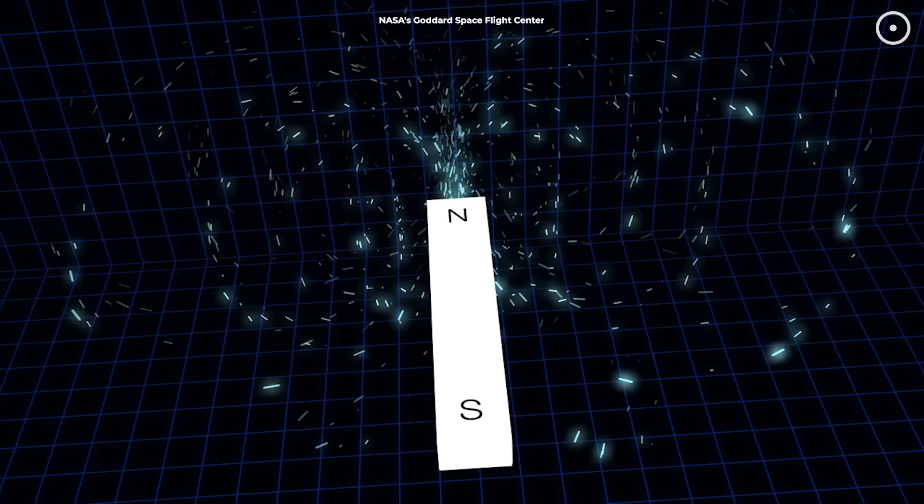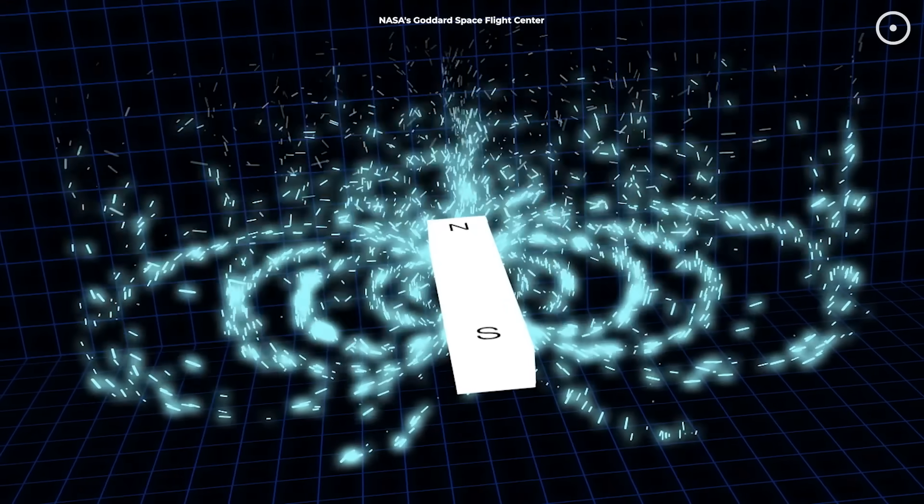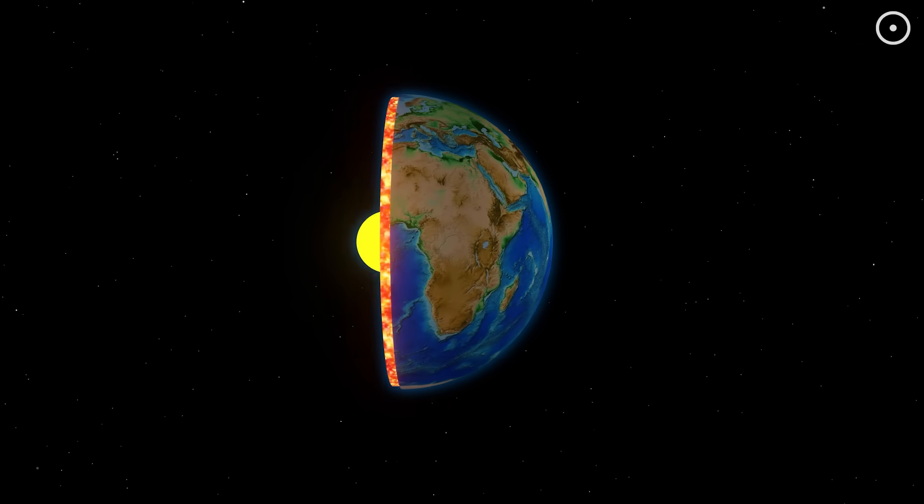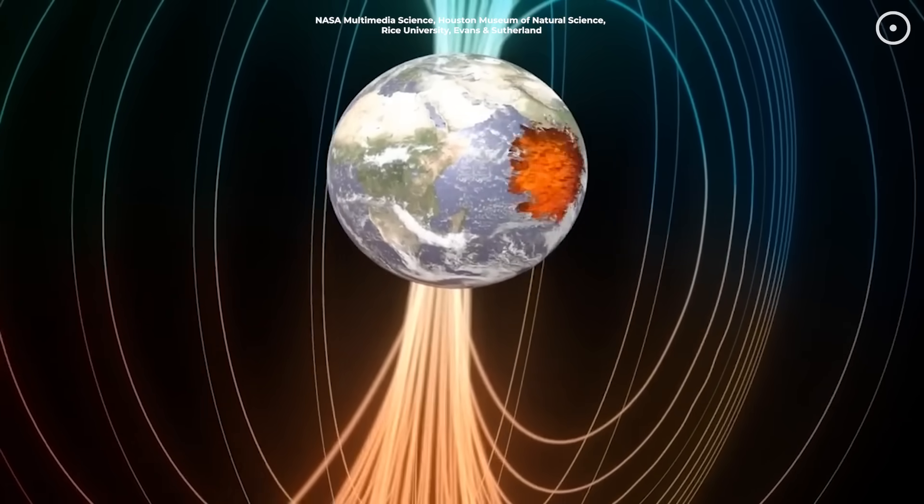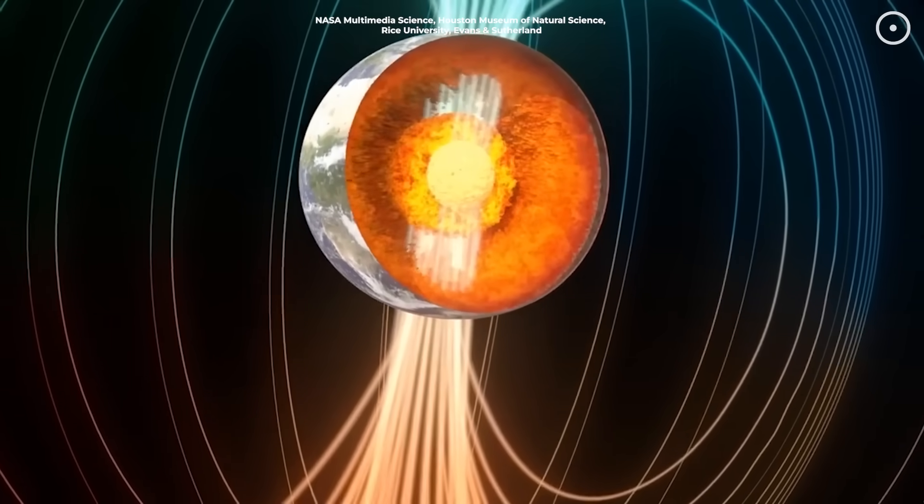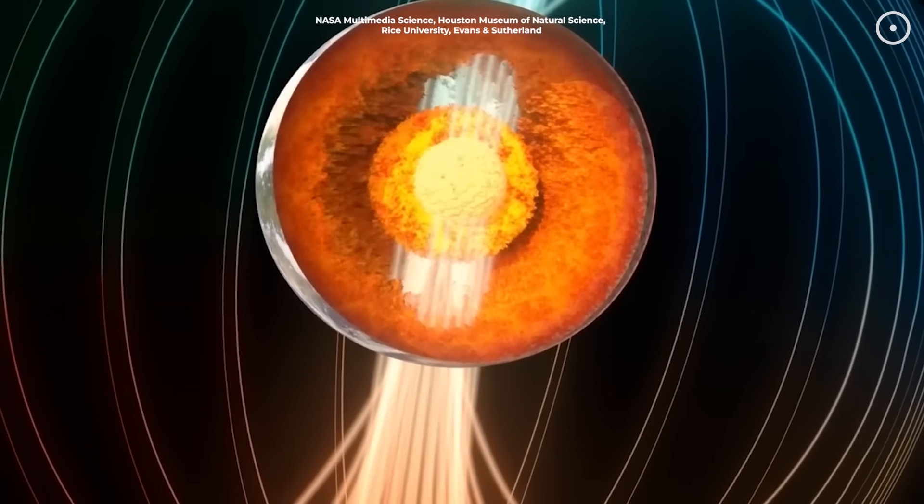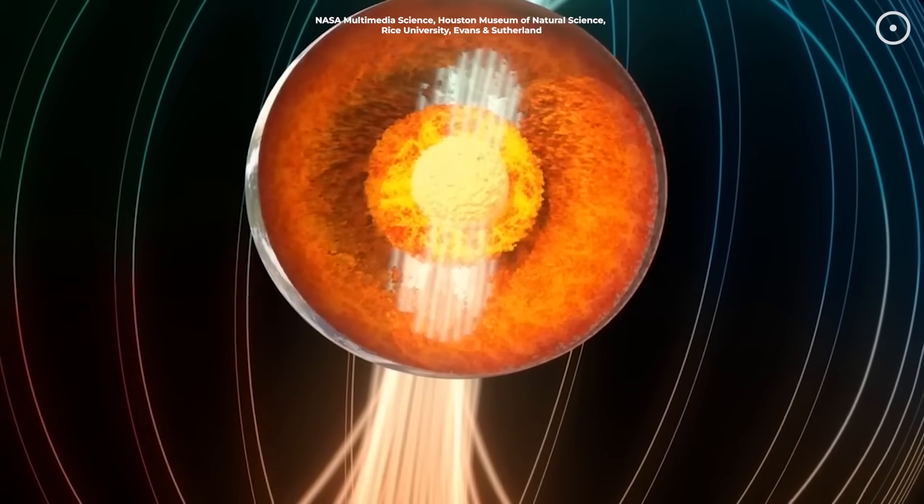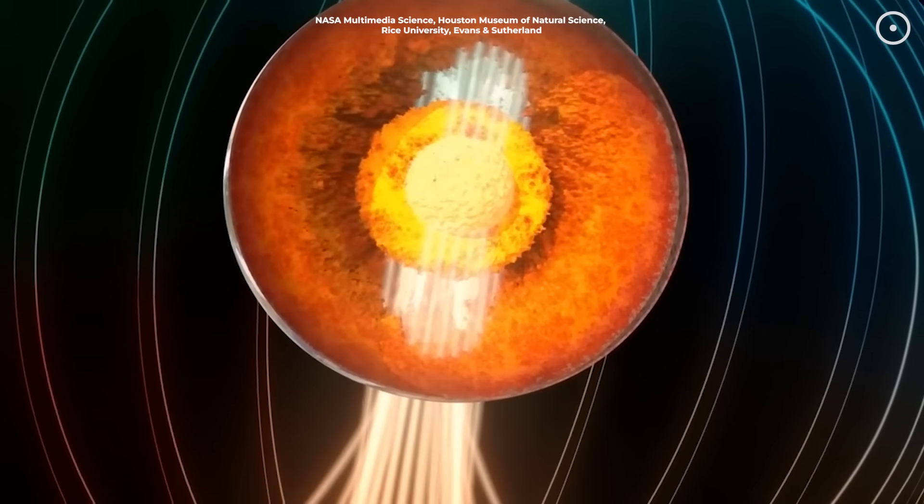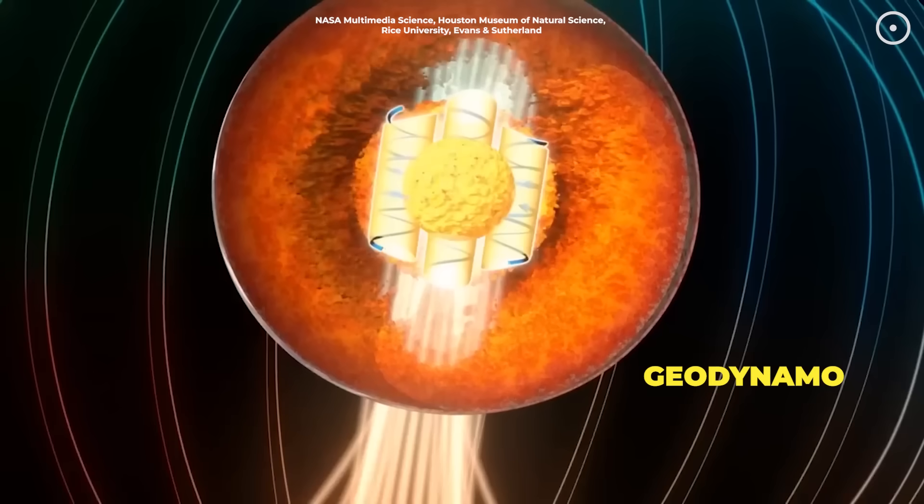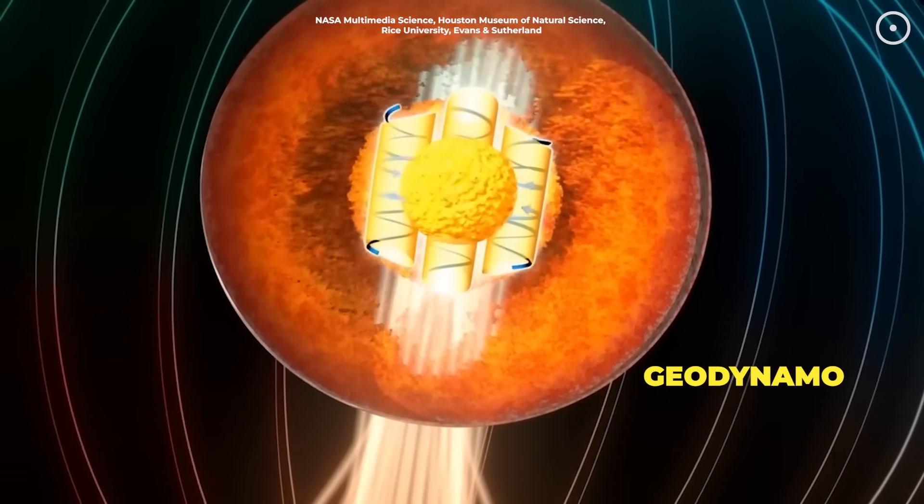Earth is just like a giant bar magnet, but instead of a solid piece of metal, the source is actually a massive ocean of liquid iron swirling deep beneath our feet. This molten sea, about 1,800 miles below the surface, creates electrical currents hundreds of miles wide, flowing at thousands of miles per hour as Earth rotates. Scientists call this the geodynamo, nature's own power plant.